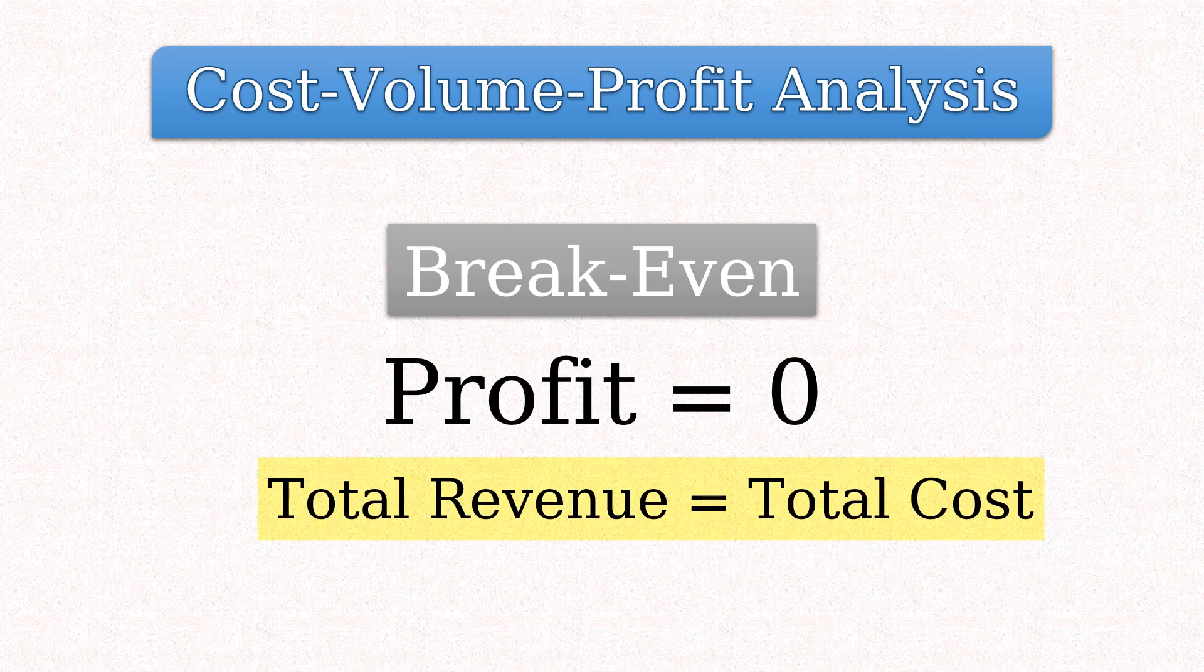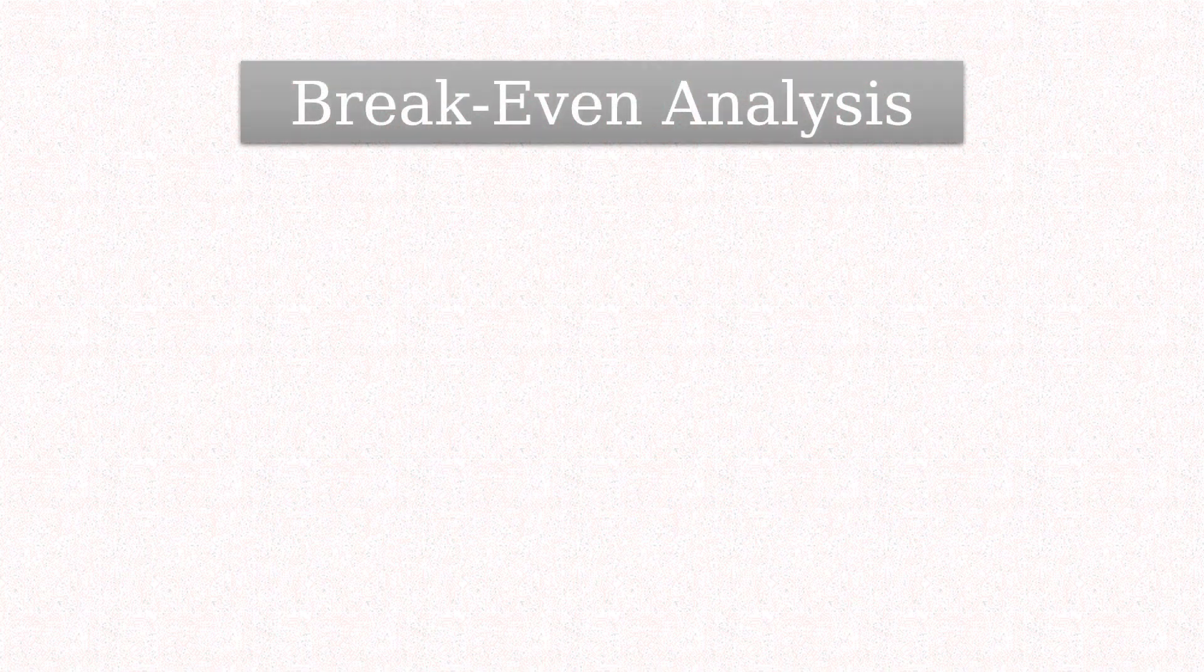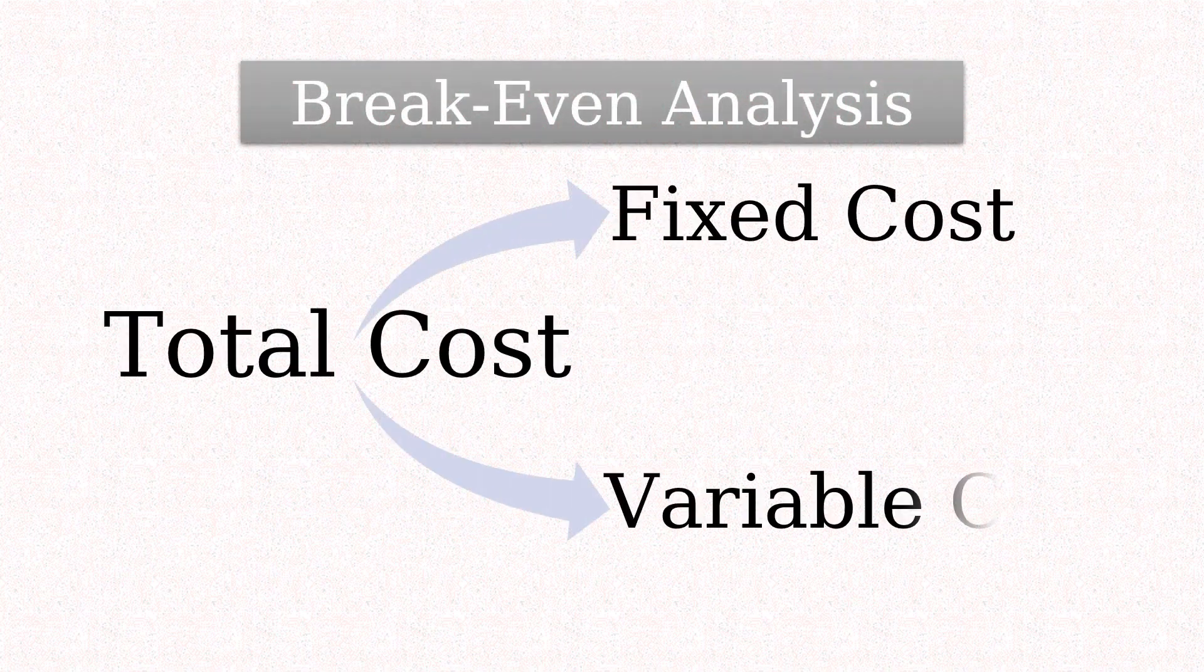So at break-even point, total revenue equals total cost. In theory, total cost is divided mainly into fixed costs and variable costs.